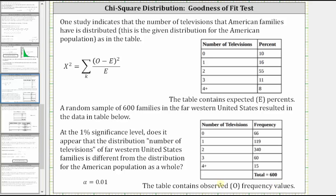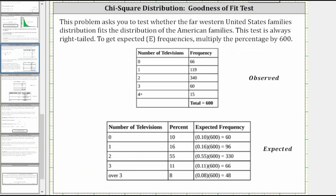This table contains the observed frequency values. At a 1% significance level, does it appear that the distribution of the number of televisions of far western U.S. families is different from the distribution for the American population as a whole? Because we have a 1% significance level, alpha is equal to 0.01. This problem asks us to test whether the far western U.S. families distribution fits the distribution of the American families.